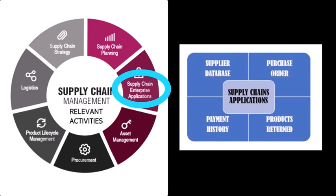Kemudian yang ketiga, payment history. Di dalam fitur payment history terdapat sekumpulan riwayat pembayaran dari pembelian yang telah terjadi sebelumnya. Yang keempat, product return. Produk yang dikembalikan oleh konsumen dapat dicatat dan didata dengan rapi pada fitur ini agar nantinya dapat dilihat dengan jelas berapa total jumlah barang yang dikembalikan. Tentunya selain 4 fitur di atas, masih banyak lagi fitur lain dalam supply chain management yang dapat dikembangkan sesuai dengan kebutuhan perusahaan.